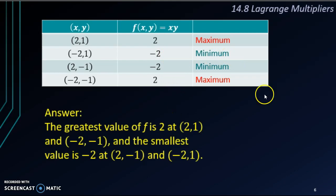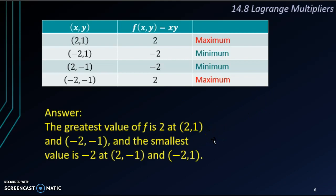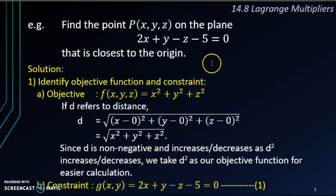Since the only values obtained are 2 and negative 2, we conclude that the greatest value of f is 2, attained at (2, 1) and (-2, -1), and the smallest value is negative 2, attained at (2, -1) and (-2, 1). This completes the example of a function of two variables. Next, we look at an example involving three variables.